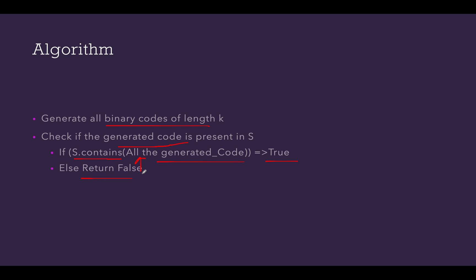What are the issues with this approach? The primary issue is that we are generating all the binary codes. That means we have to generate 2 raised to power k binary codes if k is the given integer and that would be expensive. And again we will be checking for each of this generated code whether it is part of the string or not. That would again be expensive.